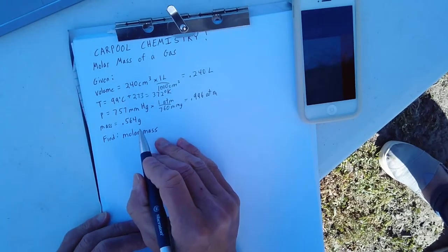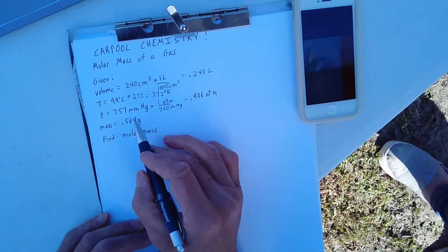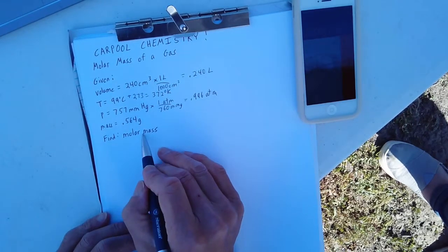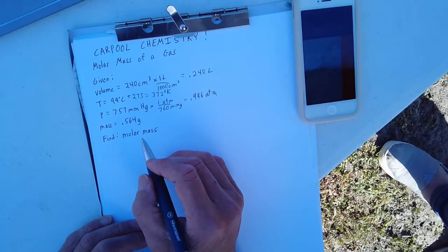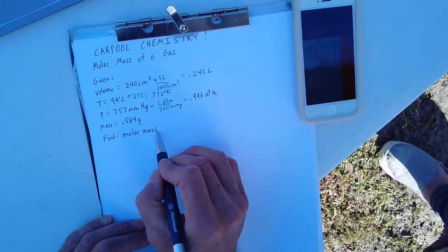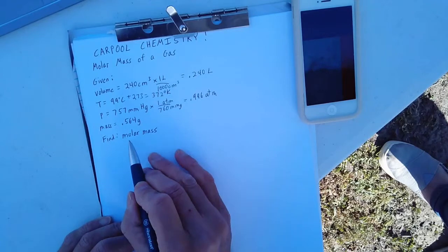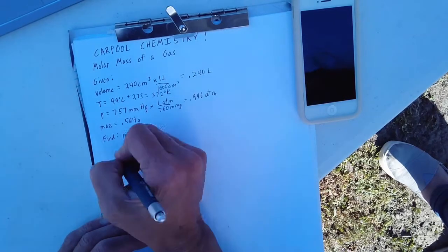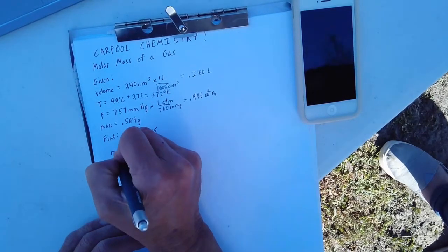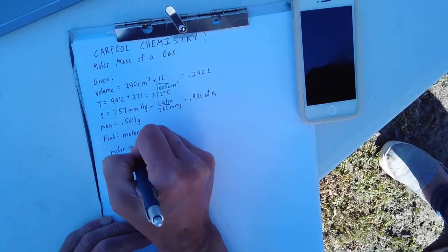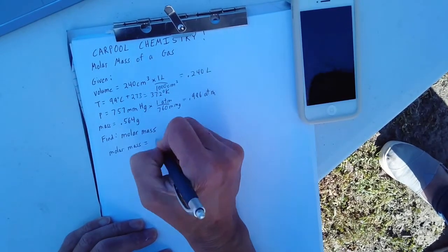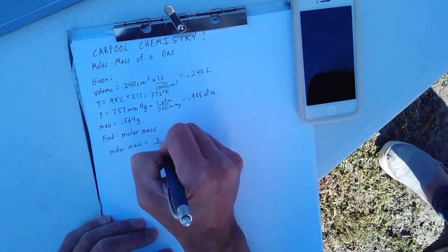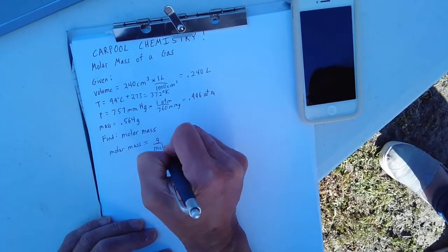And we have a mass of 0.564 grams. We're asked to find the molar mass. We know that the basic fundamental definition of molar mass is the mass of one mole. So let's write down that formula. Our molar mass is equal to mass measured in grams, so it's the number of grams per mole of our gas.